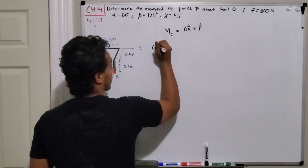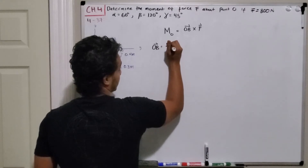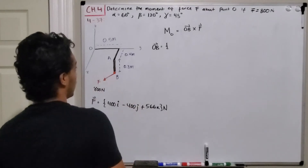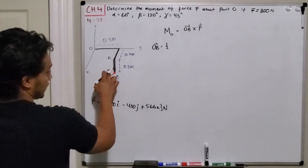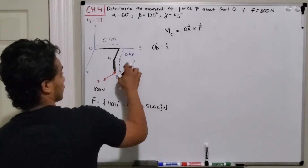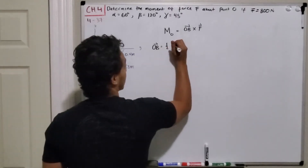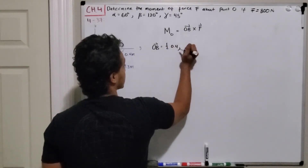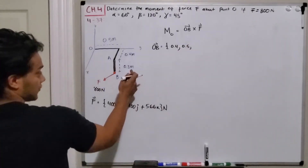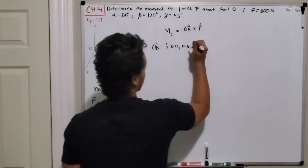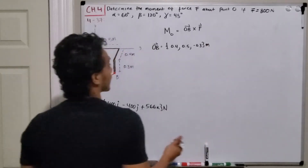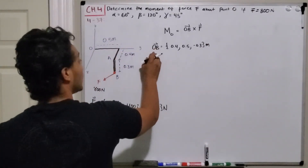To find vector OB, we do B minus O. Since O is the origin, everything is given by B. In the x direction we have 0.4 meters, in the y direction we have 0.5 meters, and in the z direction we have negative 0.3 meters — basically going down. So we've found our vector OB.